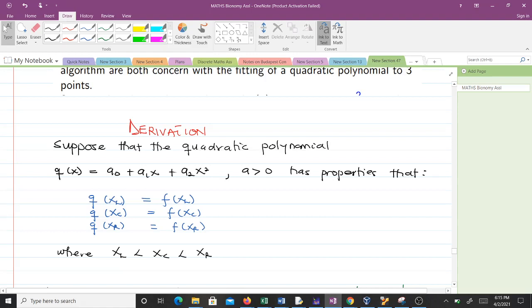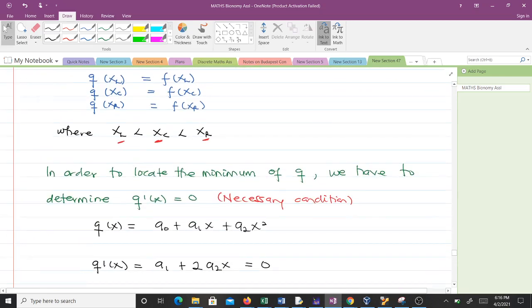Suppose that the quadratic polynomial q(x) equals a₀ + a₁x + a₂x² where a₂ is positive and a₂ is not zero. And they have these properties where xₗ, xc, and xᵣ are points where xₗ is less than xc and xc is less than xᵣ.